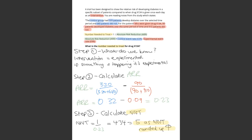So what we get is 0.32 minus 0.09, and that gives us an ARR — an absolute risk reduction — of 0.23. Then after that it's pretty simple: it's 1 divided by 0.23, which gives us 4.34. But as always with NNT, we round up, so our answer is 5 patients for this one.